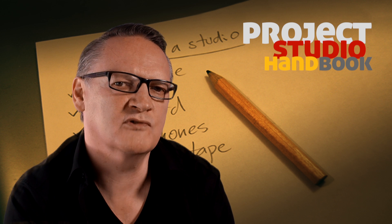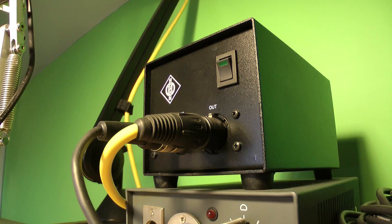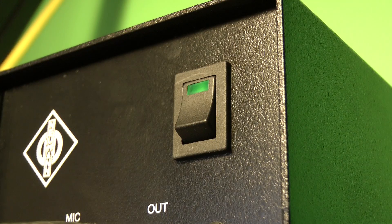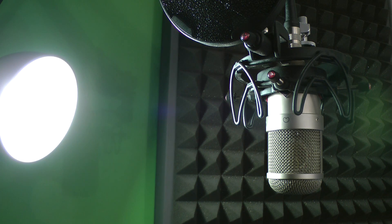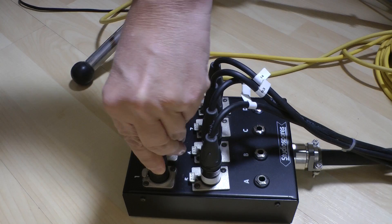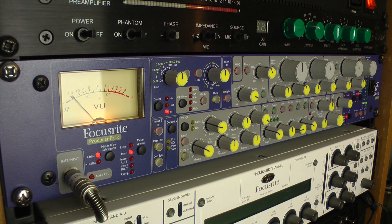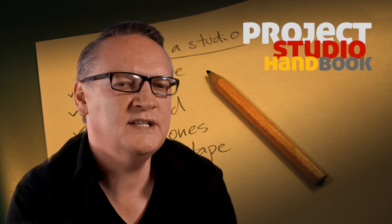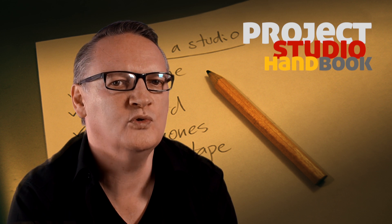Capacitor microphones that employ valves in their electronics require more than 48 volts and thus have their own accompanying power supplies which both power the microphone and receive the audio signal before it is sent to a microphone pre-amplifier. Phantom power is covered in detail in a separate video tutorial.